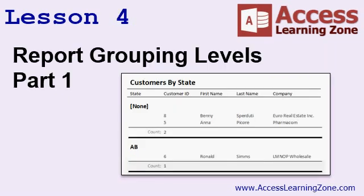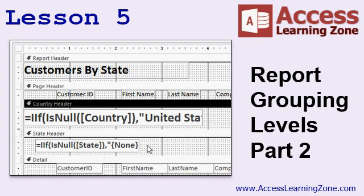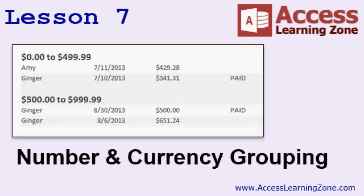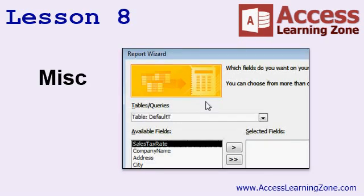In lesson four, we're going to begin taking a look at report grouping levels, where you can group records on a report based on one or more fields, such as showing all the customers grouped by state. In lesson five, we're continuing our look at report grouping levels. In lesson six, we're going to build a work log report, grouped by employee, grouped again by the week of the year, displaying the week begin date, and then calculating the total hours worked. We've seen so far how to group by text and by dates — now we're going to see how to group by numbers or currency values. In lesson eight, I've got a few miscellaneous items: group by expression, the simple report wizard which also handles grouping levels, and your homework for the next class. Let's go.